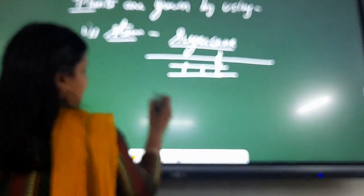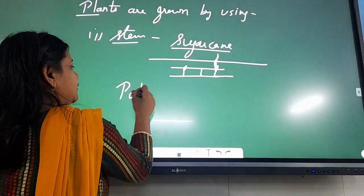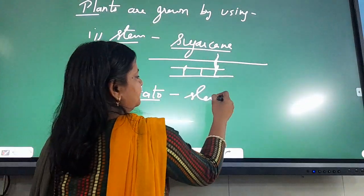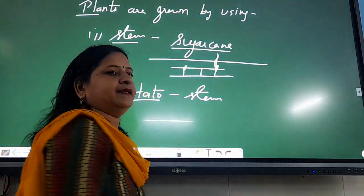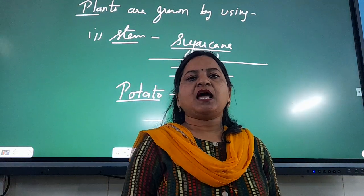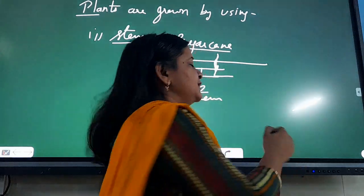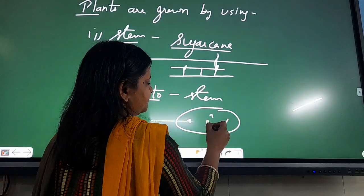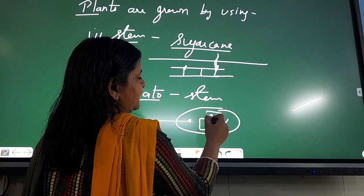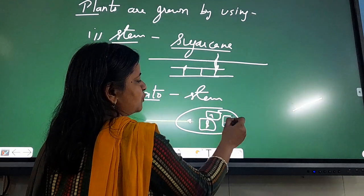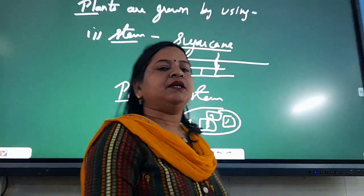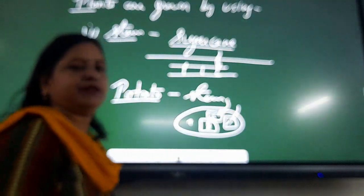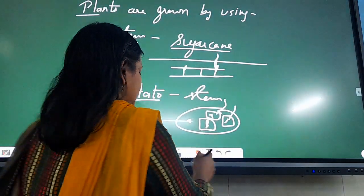In the same way, there's another example: potato. Potato is also a stem — it is underground, but it is a stem, as we can see the buds on it. These parts are called eyes, and they can develop into new plants if they are buried in the soil.